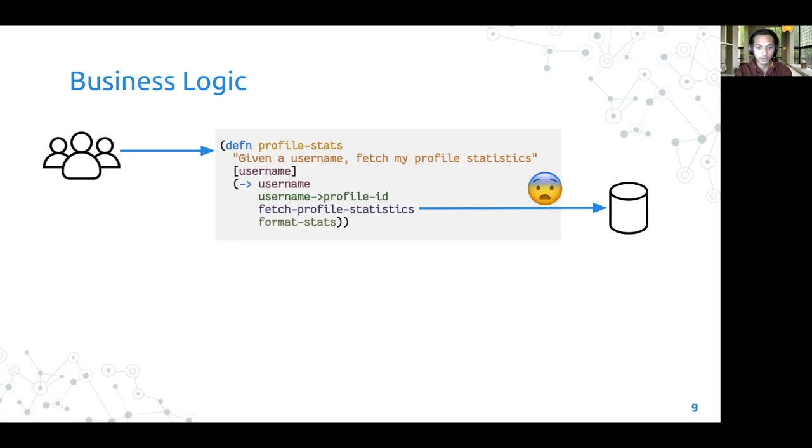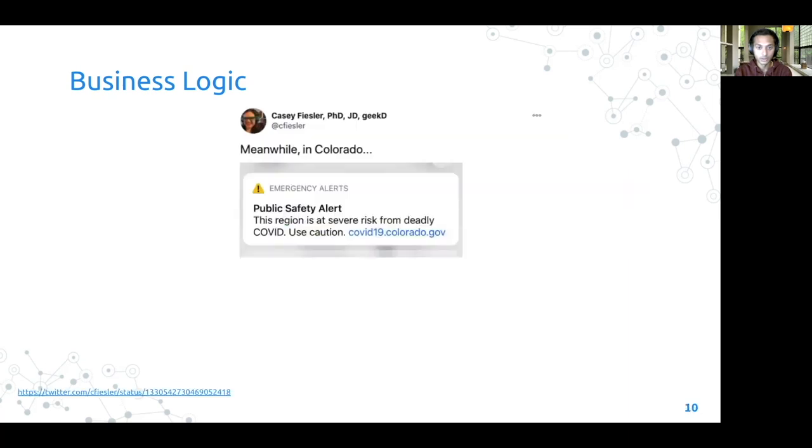If something happens to the database and the call to the database does not go through, the user might see something like this, where a public safety notification was sent to the user's device. And upon clicking on the notification, they are shown something like an Nginx 504 timeout error. This kind of break of user experience is what we hope to prevent with resilient systems.